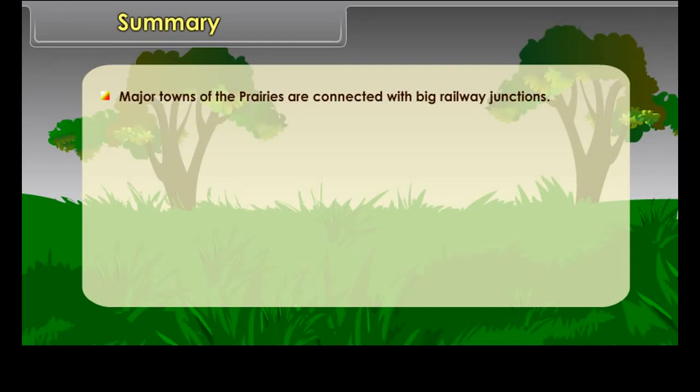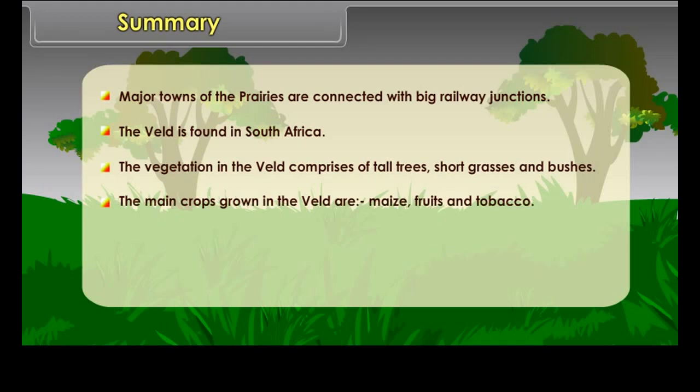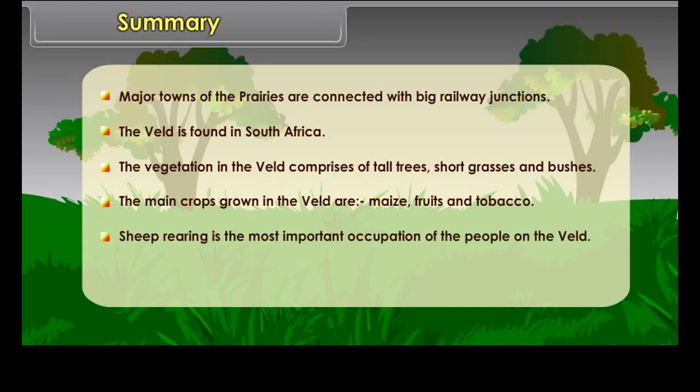Summary: The Prairies and the Veld are temperate grasslands. The Prairies are found in the interior parts of USA and Canada in North America, with an extreme climate and fertile soil ideal for farming and cattle rearing. Wheat farming is the main agricultural activity, and major towns are connected with big railway junctions. The Veld is found in South Africa, with vegetation comprising tall grasses and bushes. The main crops are maize, fruits and tobacco, and sheep rearing is the most important occupation.